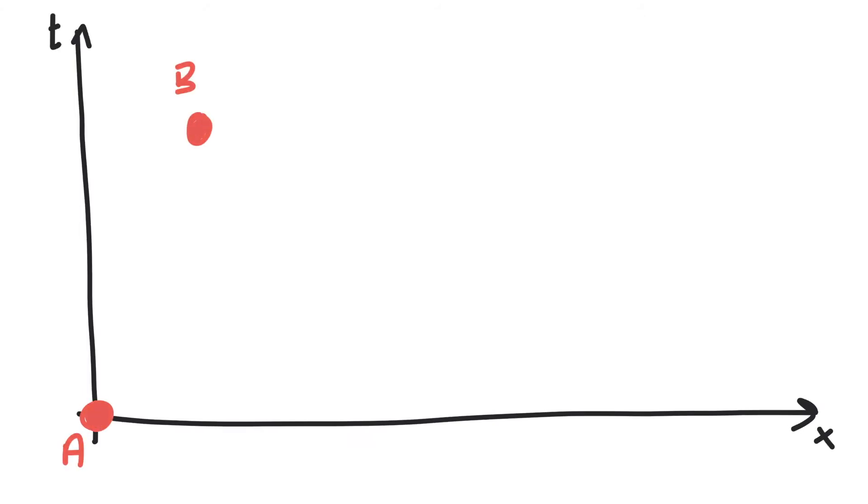This means that there exists a frame where A and B take place at the same position, but no frame where A and B happen at the same time.